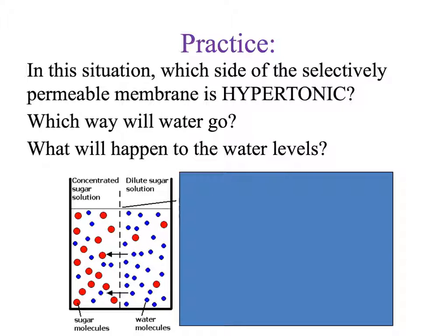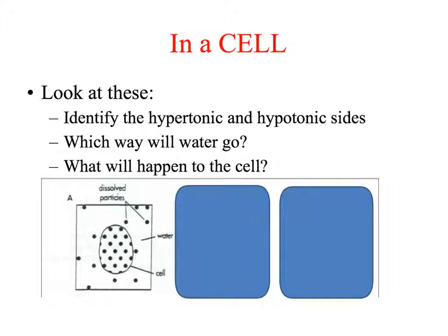Water molecules will move to the left because there's more concentrated sugar on that side and less water. The water levels on the right will lower and the levels on the left will rise. In our cell illustration, the hypertonic side is inside the cell — more particles make it hypertonic — and the outside is hypotonic.